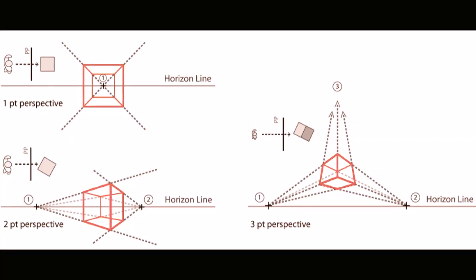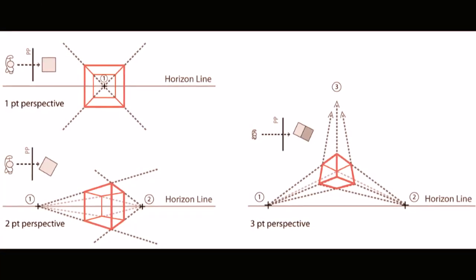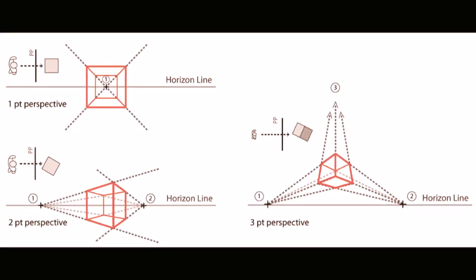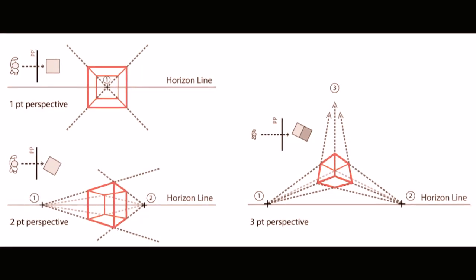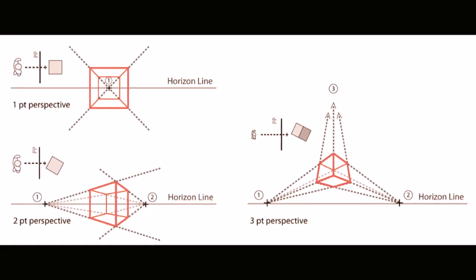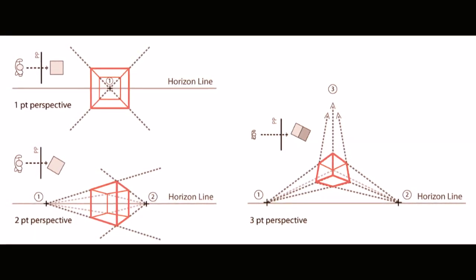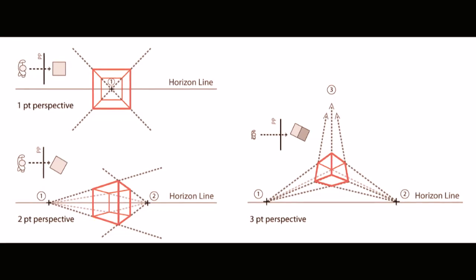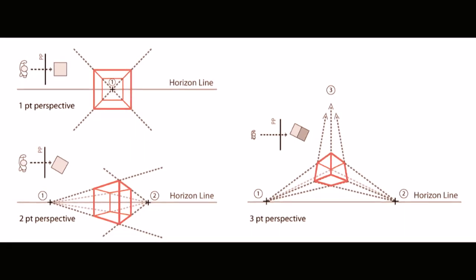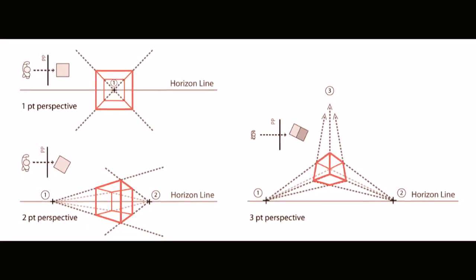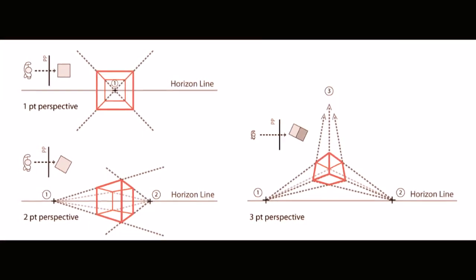Of the many types of perspective drawings, the most common categorizations of artificial perspective are one, two, and three-point perspective. The names of these categories refer to the number of vanishing points in the perspective drawing.